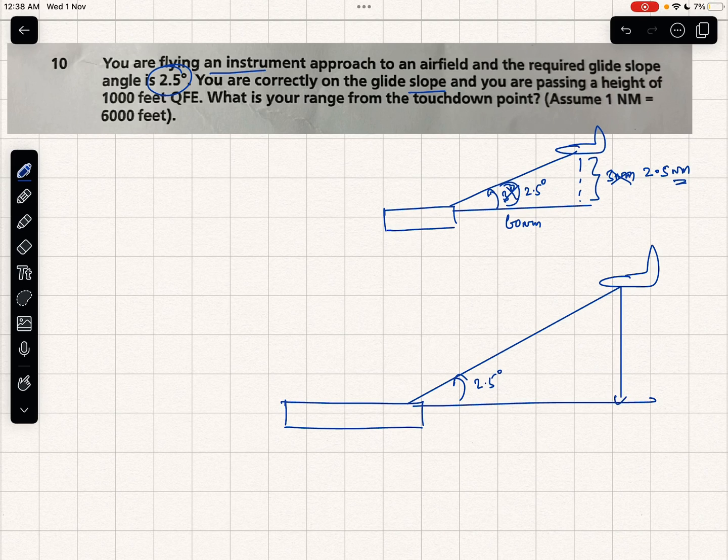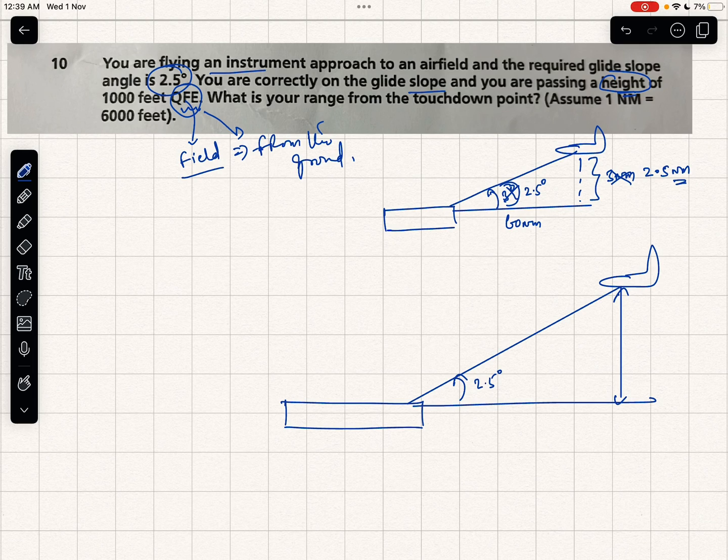He said height. Height means measured from the ground. QFE means you are measuring with the help of a pressure altimeter. Whenever you see F, that means it is the pressure on the field. It also signifies height, so that means it is measuring vertical distance from the ground, not from mean sea level.